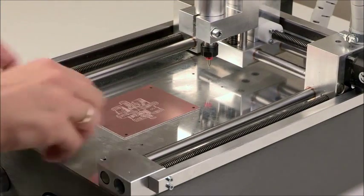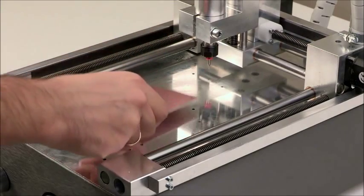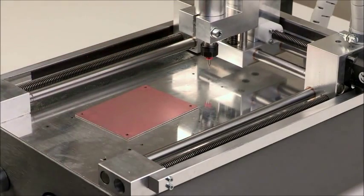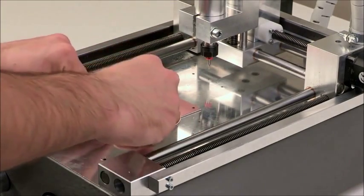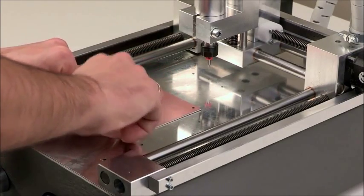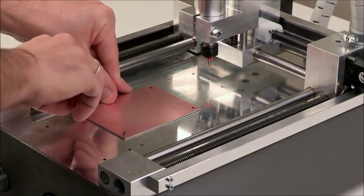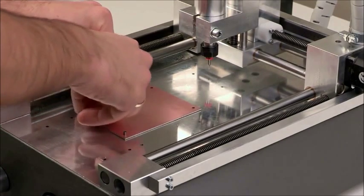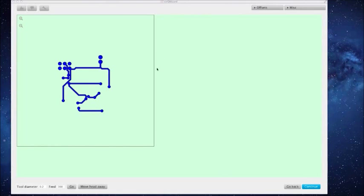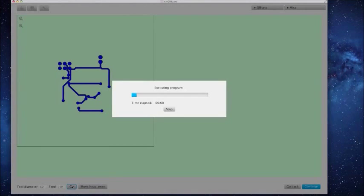Now the bottom traces need to be milled. So the board is flipped to the other side. Because of the pins that hold the board in the machine, the software can automatically calculate the location of the traces and there is no need to align anything manually. That's the bottom layer of the board. Again, click on the go button starts milling.